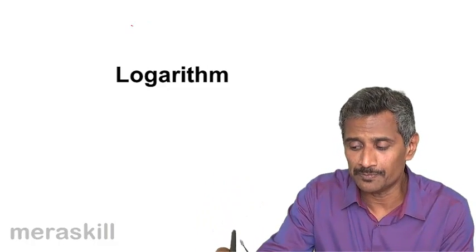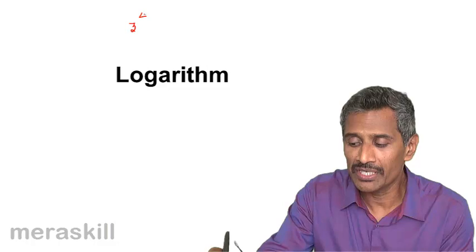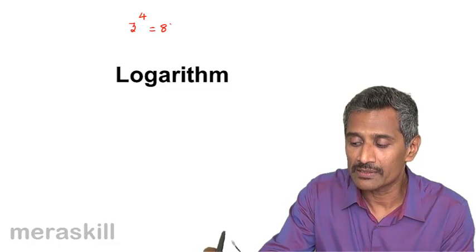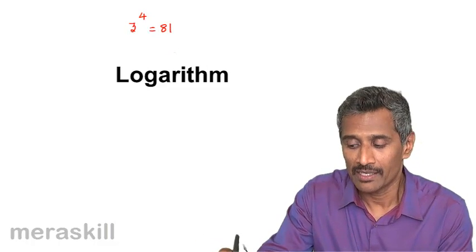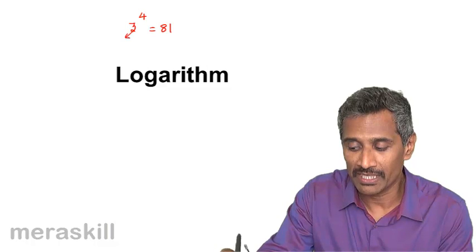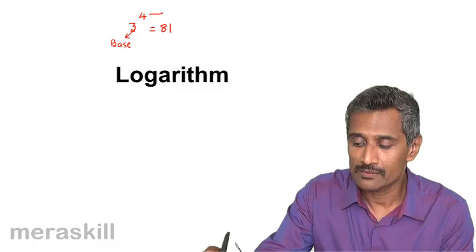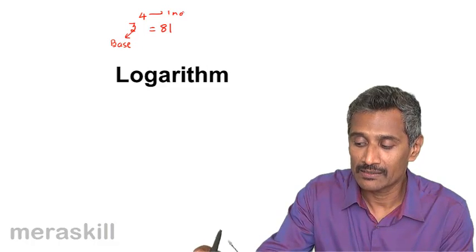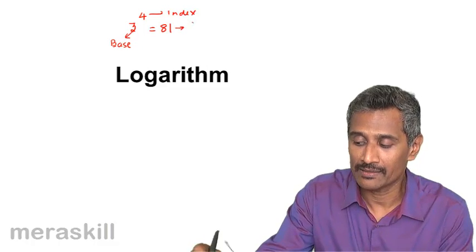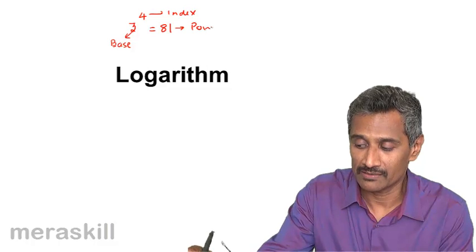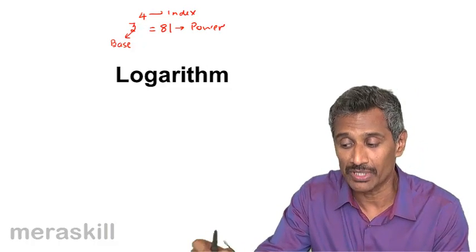For example, you have 3 raised to 4 is 81. This is the base, this is the index, and this is the power—that is, 81 is the fourth power of 3.